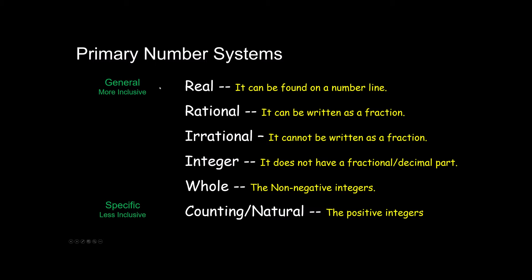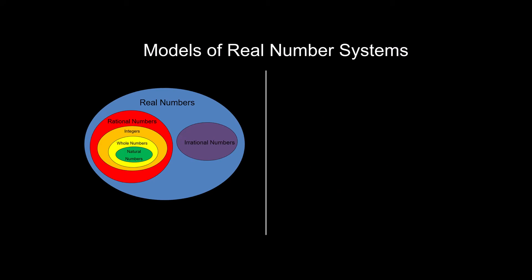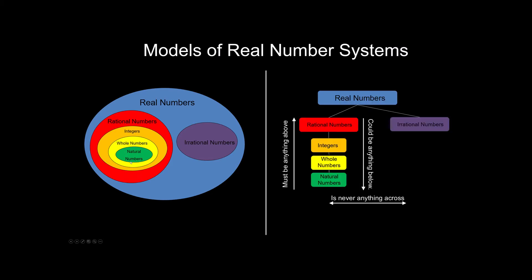For the most part, we deal with large general terms or general number systems, and we work our way down to more specific number systems. One model is very common to see inside textbooks and shows how the systems fit together — something cannot be both rational and irrational, but if it's rational, it might have better or more specific names. The other model I tend to like shows that if you start at the top and work your way down the list, anything above your number on the list will be included in the naming. It is important to note that a number can never be both rational and irrational.